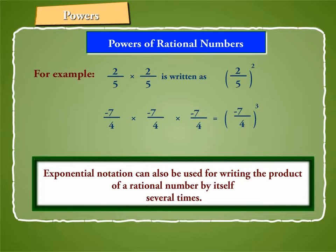Similarly, minus 7 by 4 into minus 7 by 4 into minus 7 by 4 is equal to minus 7 by 4 whole cube.